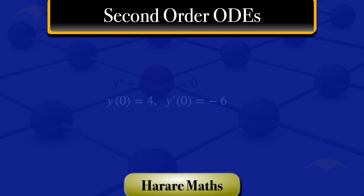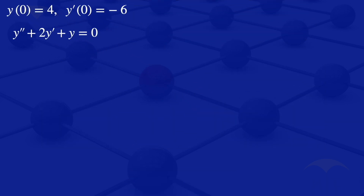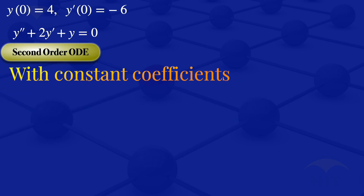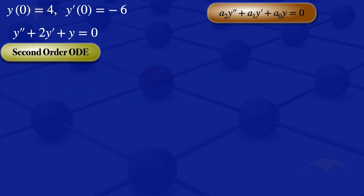What we are given is a second-order ODE with constant coefficients. It is of the form a2·y'' plus a1·y' plus a0·y equals 0, where a2, a1, and a0 are constants.